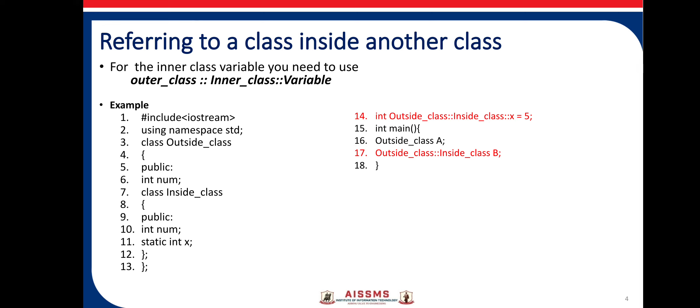In this example, we define a class inside another class. The outer class name is declared at line number 3. We declare one more class inside the outer class from line number 7. If I want to access the variable x, which is declared at line number 11, check out line number 14, which is highlighted in red. As the syntax states: first we write down the outer class name, then Scope Resolution Operator, then the inside class name, then Scope Resolution Operator, then variable x, and the initialization of a value.